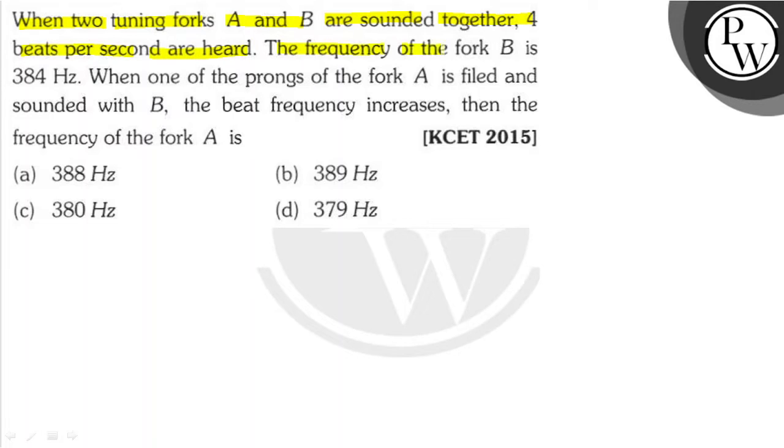The frequency of the fork B is 384 Hz. When one of the prongs of the fork A is filed and sounded with B, the beat frequency increases.